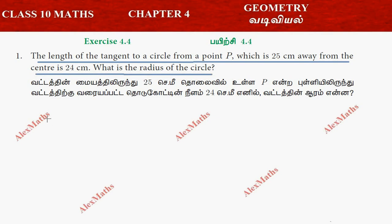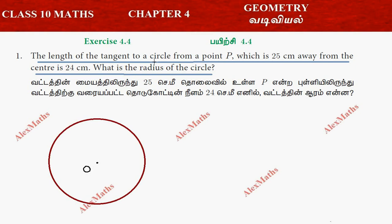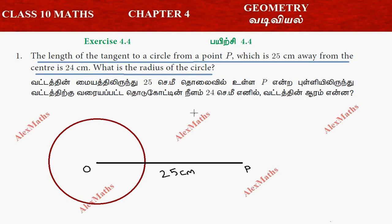So if you look at the diagram, there is a circle. That is the radius, and the center is somewhere. The length of the tangent from a point P — the point P is 25 cm away from the center. So this will be a tangent here, and the tangent is perpendicular to the radius line.